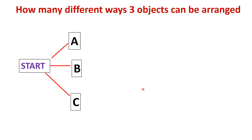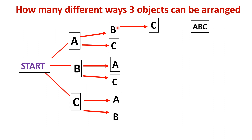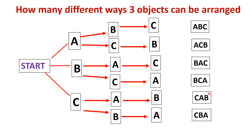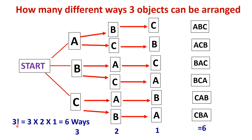Now let us see in how many different ways we can arrange three objects — A, B, C. Mapping A to B then C, we get: ABC, ACB, BAC, BCA, CAB, CBA. You can see 3 branches, then 2, then 1. When we multiply: 3 into 2 into 1, that is 3 factorial = 6. So with three objects, we can arrange them in 6 ways.